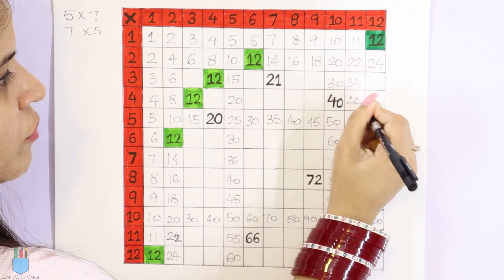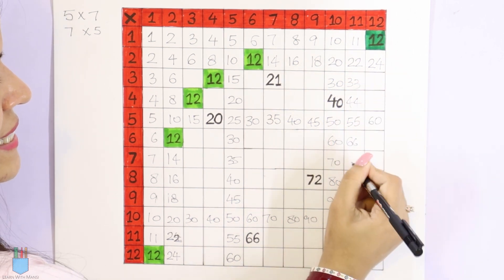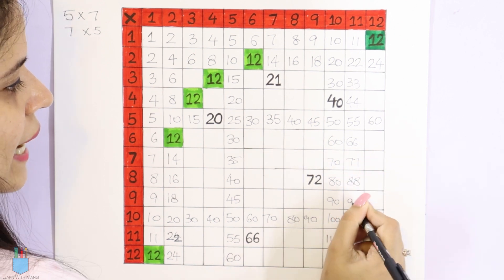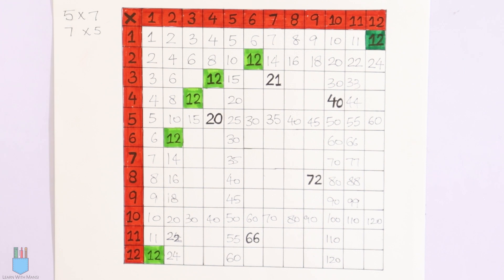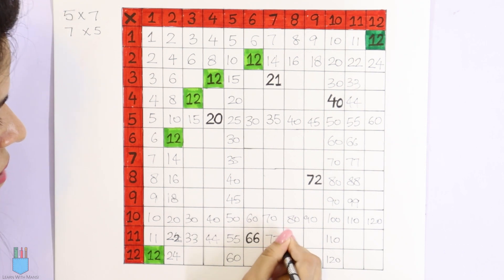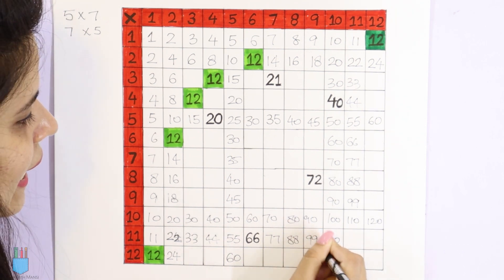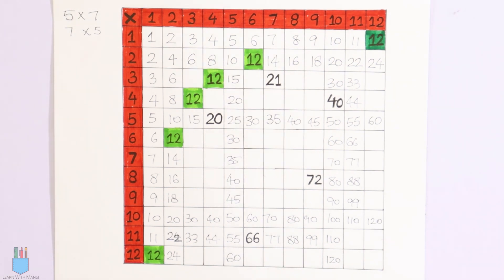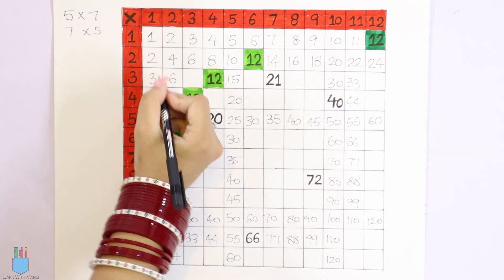Now for the 11 times table: 11, 22, 33, 44, 55, 66, 77, 88, 99. And 11 into 10 — continuing through to 12.